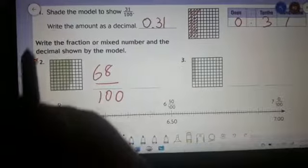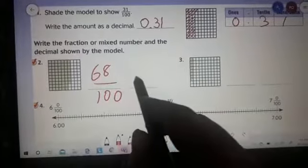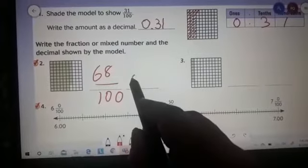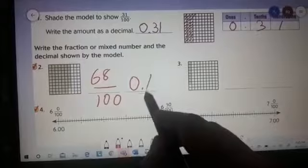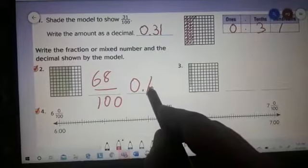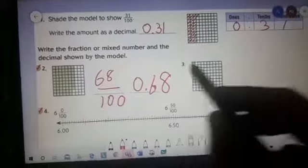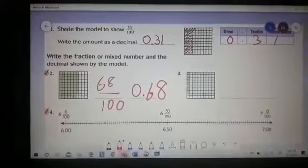In decimal, again we do not have any whole numbers here, so it would be 0.68. Now try solving question number 3 in the same way.